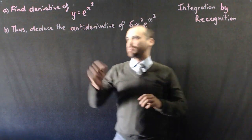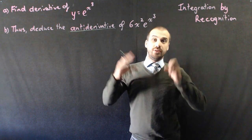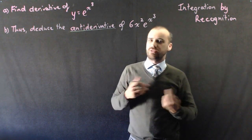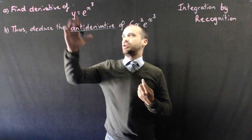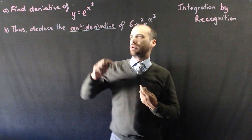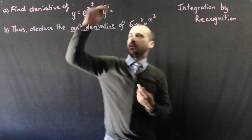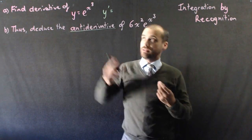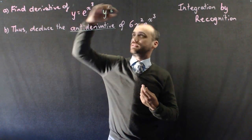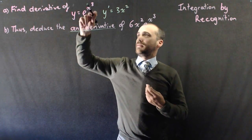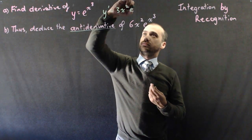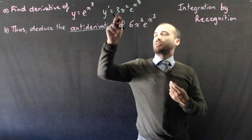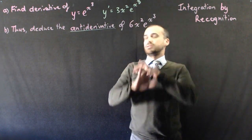Here's another question — exactly the same style; I've just used the word anti-derivative instead of integral. Anti-derivatives and integrals are essentially the same thing with a small nuanced mathematical difference we won't go into. Find the derivative of y equals e to the x cubed. The derivative of that is 3x squared — the derivative of the exponent — times e to the x cubed. So y' = 3x²e^(x³).